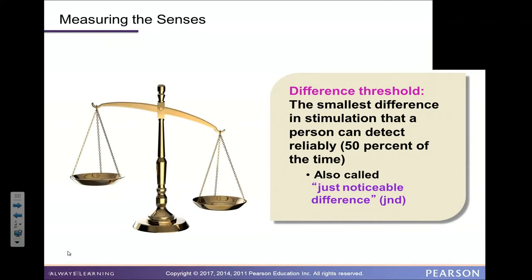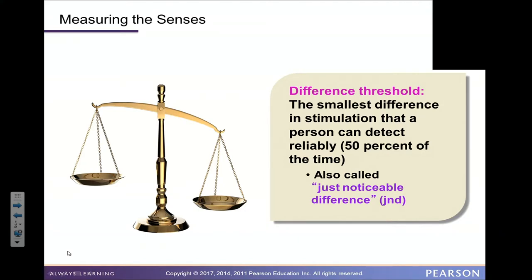How do we know that we've sensed something in the environment before we get all the way to perceiving it? Some things get sensed and others do not. When something gets sensed, it's because it has reached the difference threshold — the smallest difference in stimulation that a person can detect reliably, about 50% of the time. This difference threshold is also called the just noticeable difference. Sometimes something is so fleeting to our sight, hearing, or smelling that it goes unnoticed.